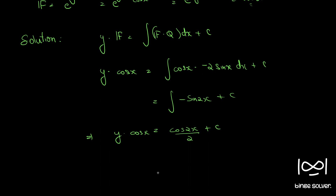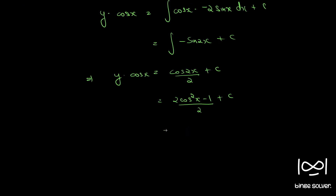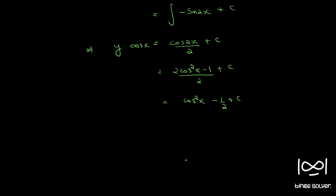Dividing throughout by cos x, we can simplify further. Using the identity cos 2x equals 2 cos squared x minus 1, we get cos 2x by 2 equals cos squared x minus 1 by 2 plus c. The constant term minus 1 by 2 is combined with c into a new arbitrary constant, giving y cos x equals cos squared x plus c1.